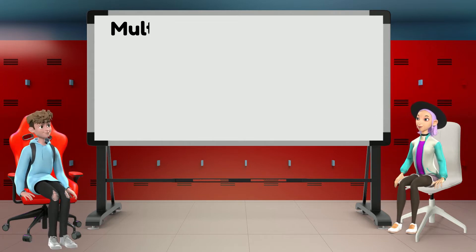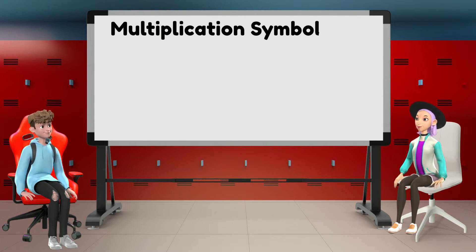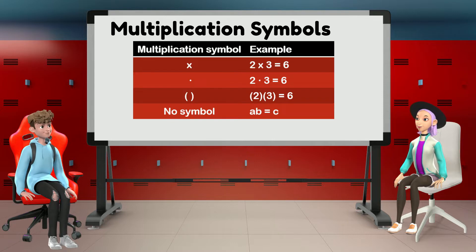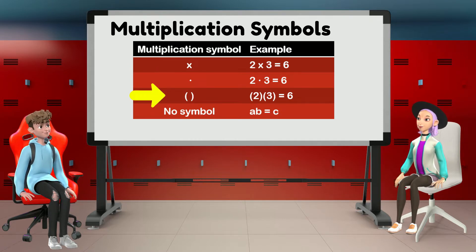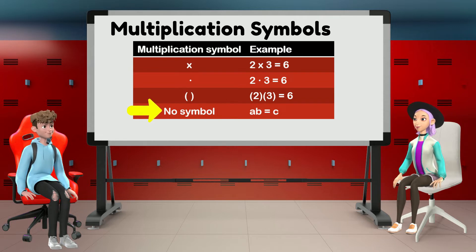Before diving into multiplying signed numbers, let us first review the Multiplication Symbols, for those who might have missed this lesson at school. Let's look at this table. The times symbol is the first symbol for multiplication that we learned in early math. A dot in between numbers is also a symbol used in multiplication. Parentheses are also used to indicate the multiplication operation. And there can also be no symbol — when two or more variables are written next to each other, that indicates multiplication.